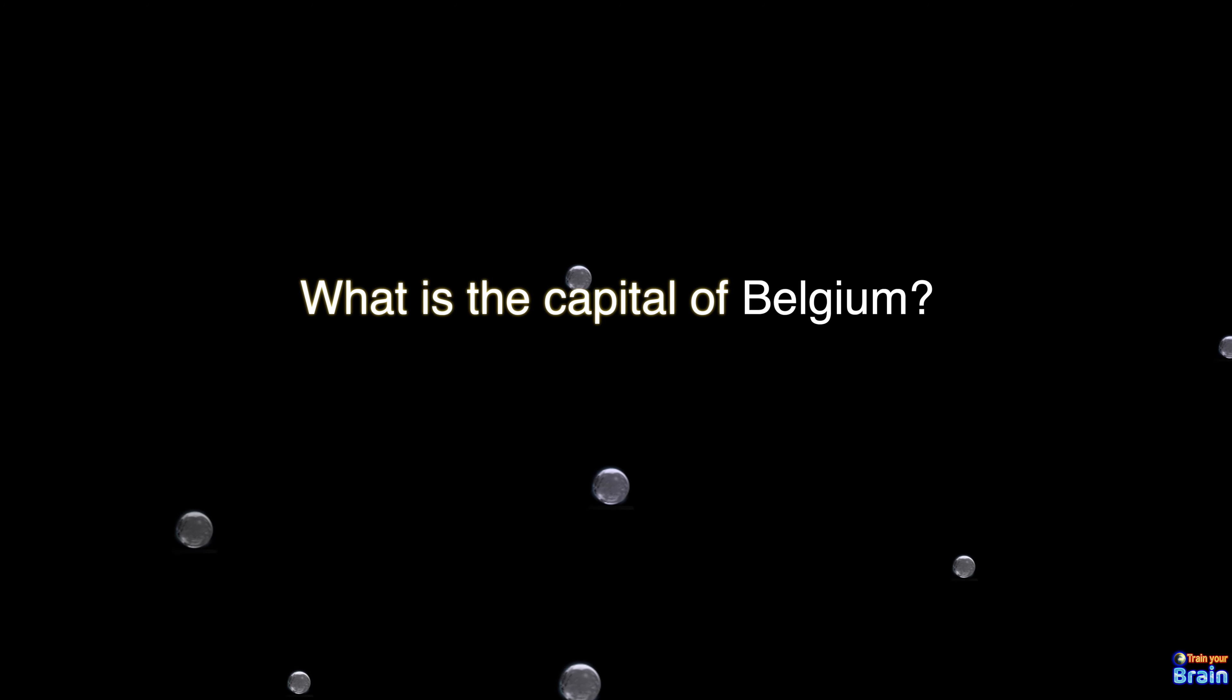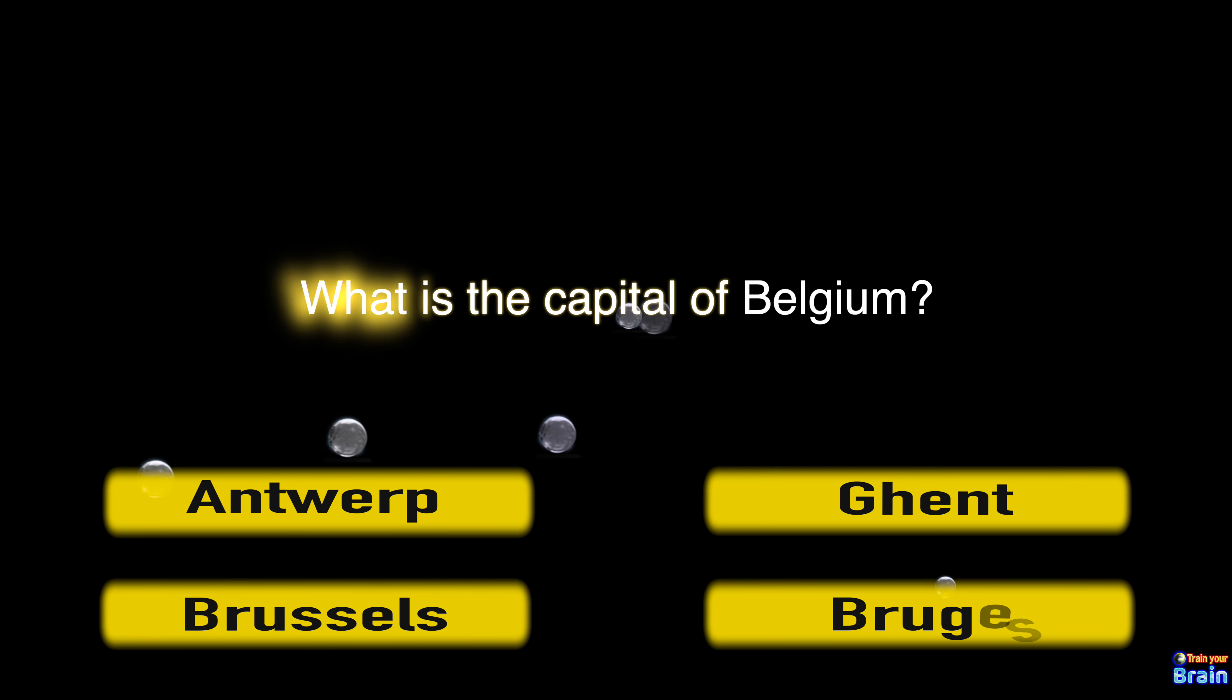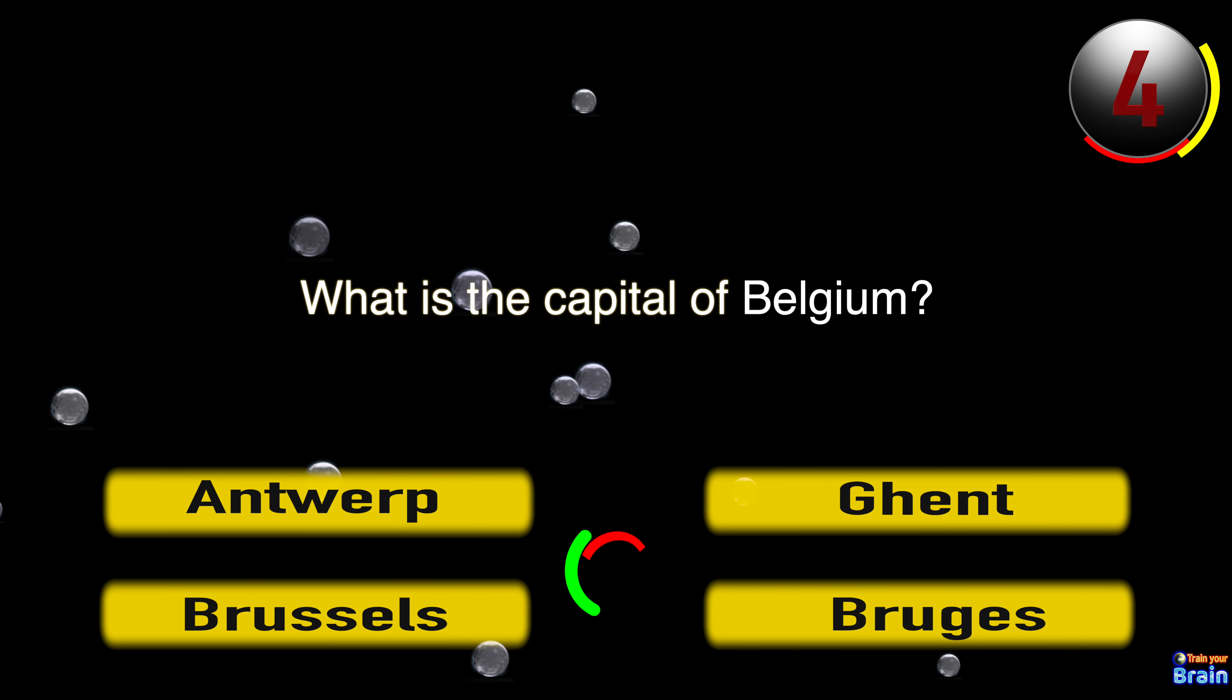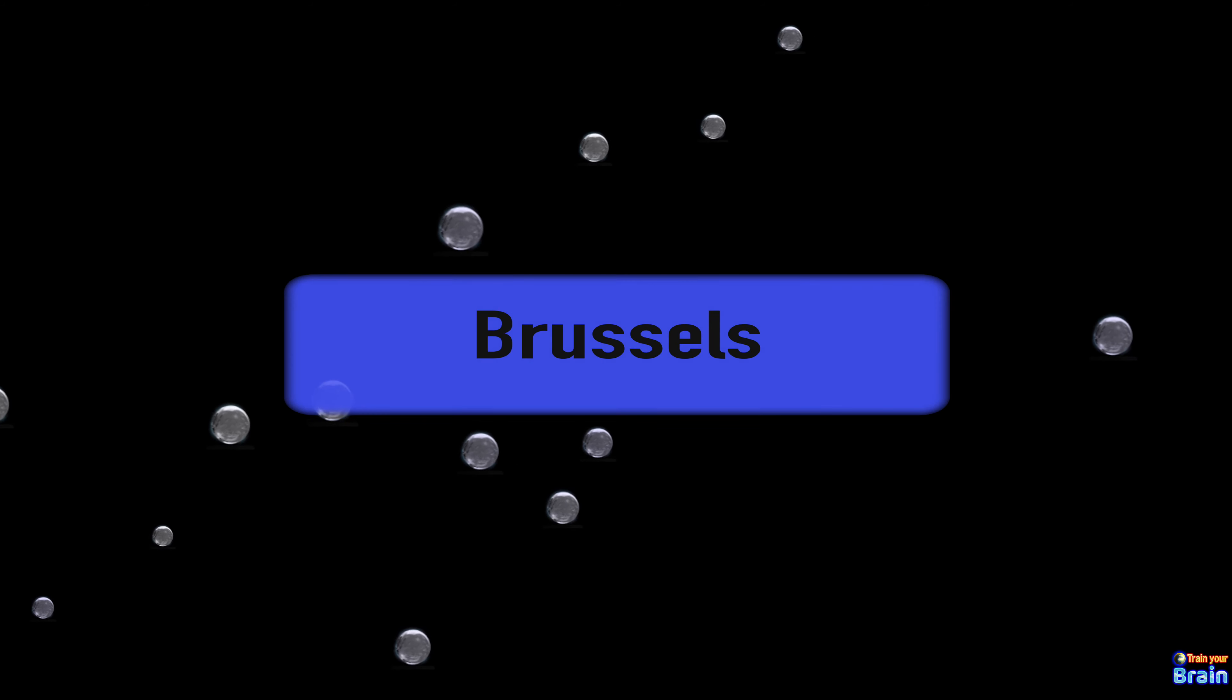What is the capital of Belgium? Antwerp, Ghent, Brussels, Bruges. And this is Brussels.